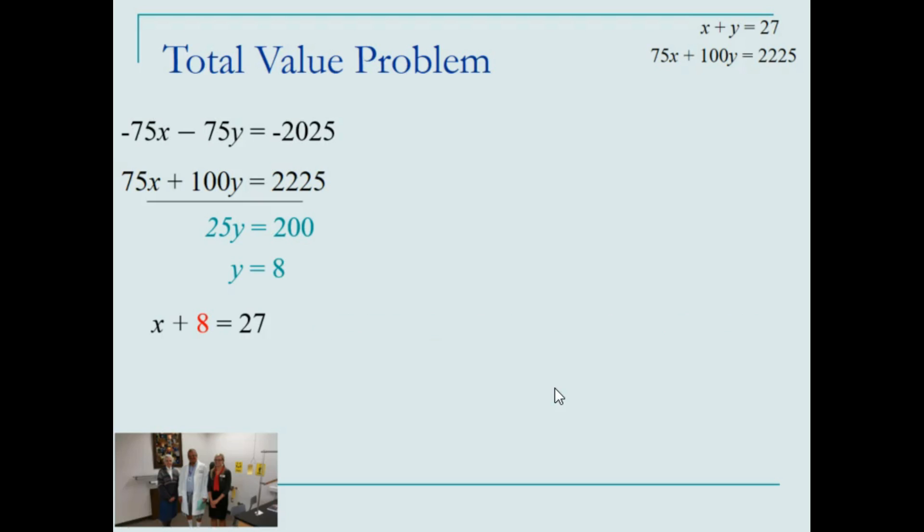Subtracting 8 from each side gives us the solution of x equal 19. Our final answer is that there were 19 $75 courses taken and 8 $100 courses taken.